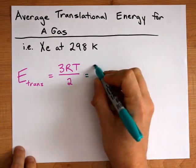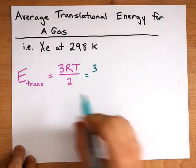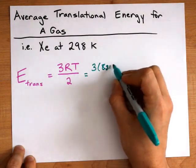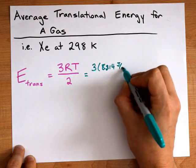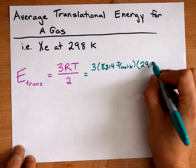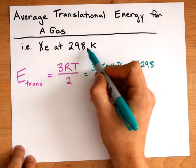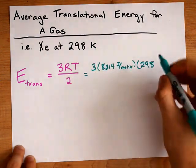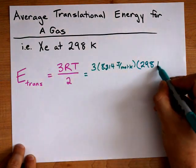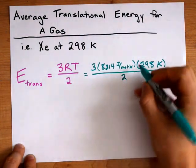In any case, the way to calculate the average translational energy is 3 times the gas constant, which is 8.314 joules per mole Kelvin, times the Kelvin temperature. If you were given your temperature in degrees Celsius, you have to add 273.15 and divide by 2.